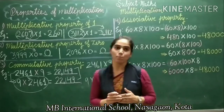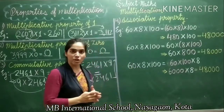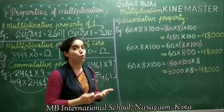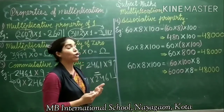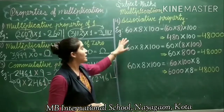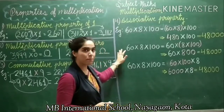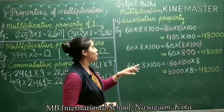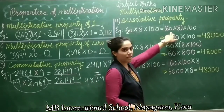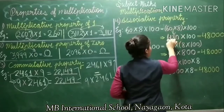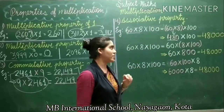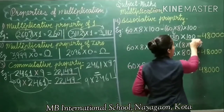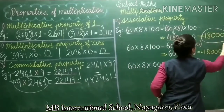The next property is associative property. It is similar to commutative property but it is applied when you are going to multiply more than 2 numbers. Here you have to regroup, that is why it is called associative property. I have taken one example with three numbers: 6, 8, and 100. First I made a group of two numbers, 6 and 8, and got the product 48, which is 480. Then I multiplied by the third number 100 and got the product 48,000.